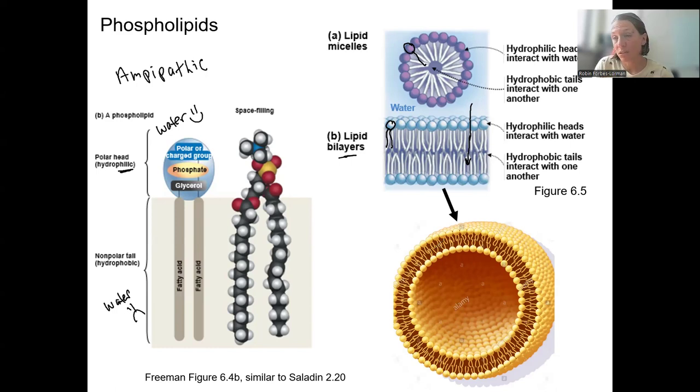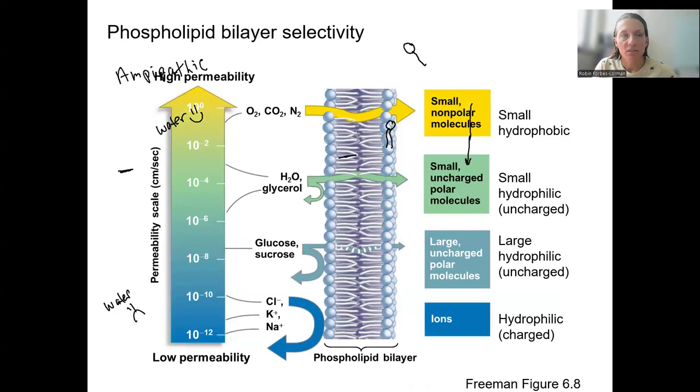So how do we know what things can get through across this bilayer without the help of membrane proteins? It's going to be things that can get through the hydrophobic portion. So what are these things? Small. Right. So things that are small and uncharged.